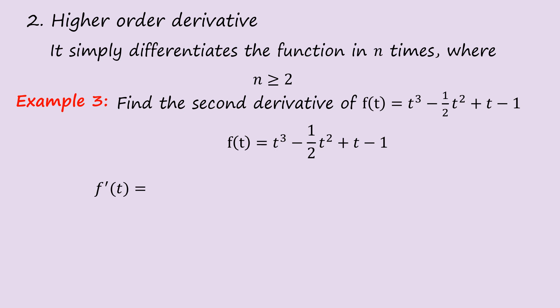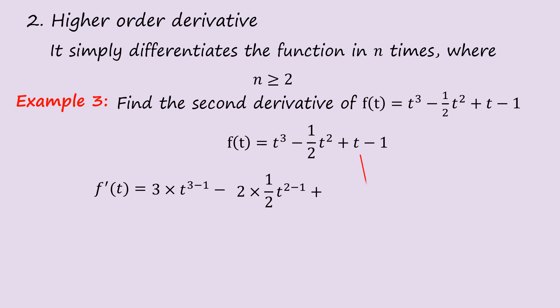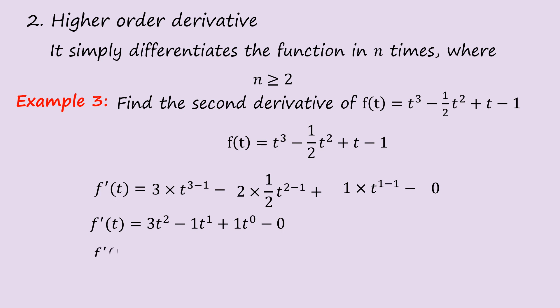Finding f′(t): the 3 comes down to give 3t², then the 2 of the second term comes down and multiplies the half to give −t, then for the ordinary t it gives 1·t⁰ = 1, and the constant −1 differentiates to 0. So f′(t) = 3t² − t + 1.